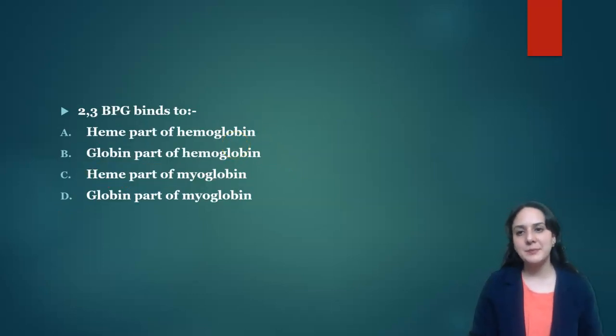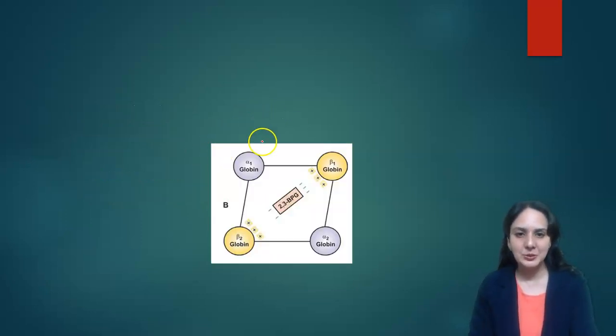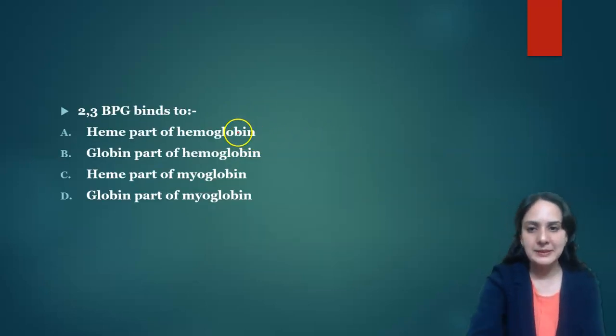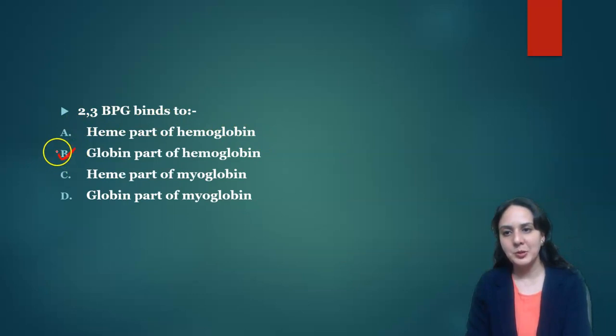Next is: 2,3 BPG bisphosphoglycerate binds to? Now 2,3 bisphosphoglycerate binds to the beta globin. So the answer is globin part of hemoglobin.